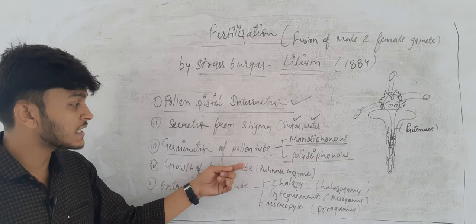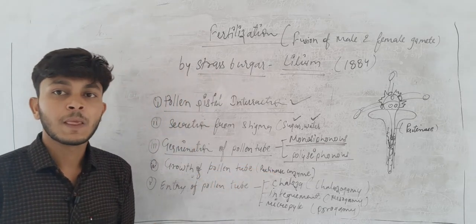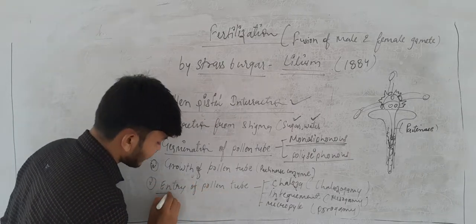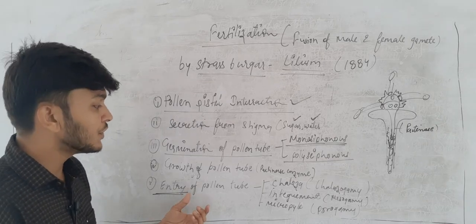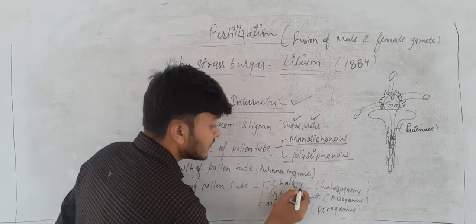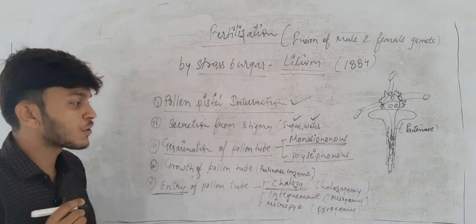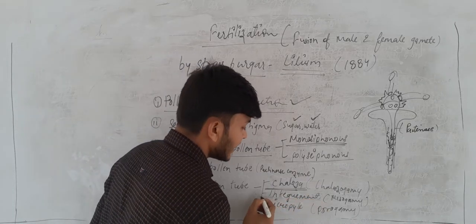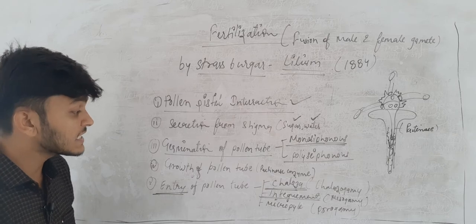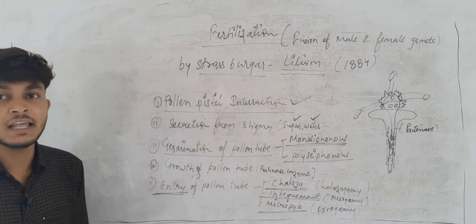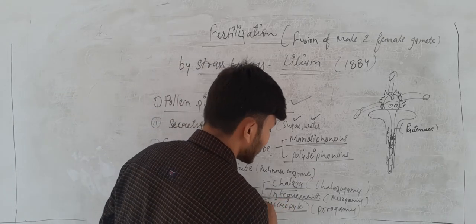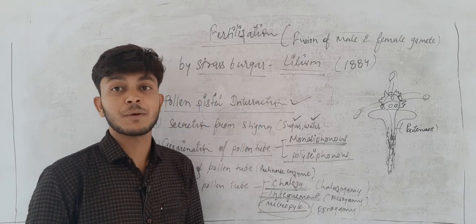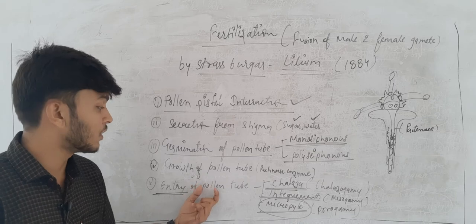The pollen tube then enters the ovule. There are three ways of entry: if it enters through the chalaza, that process is known as chalazogamy; if it enters through the integuments, it is known as mesogamy; and if it enters through the micropyle, it is known as porogamy. Most commonly in plants, the pollen tube enters from the micropyle, so porogamy is the most common type.